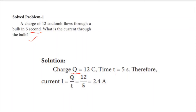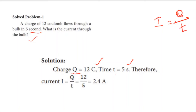Using the formula I equals Q divided by T, substituting directly: the units are in coulombs and seconds, so no conversion is needed. I equals 12 divided by 5, which gives 2.4 amperes. The current through the bulb is 2.4 amperes.